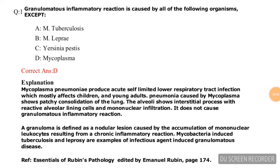Hello friends, good morning. Today we are going to discuss questions on mycoplasma. Question number one: granulomatous inflammatory reaction is caused by all of the following organisms except — M. tuberculosis, M. leprae, Yersinia pestis, mycoplasma. The correct answer is mycoplasma, option D. A brief explanation is given; you can read it by pausing the video.